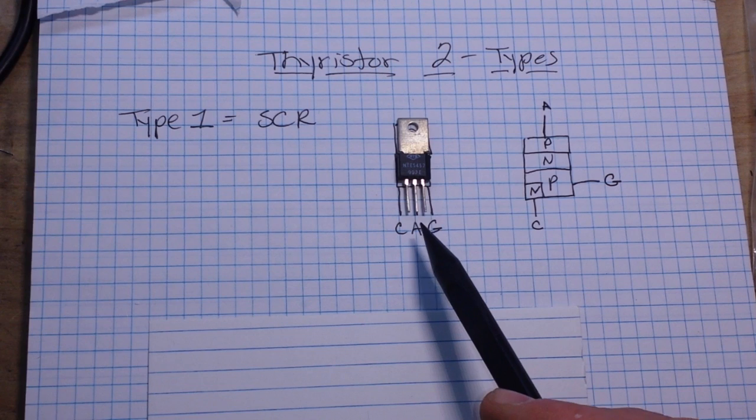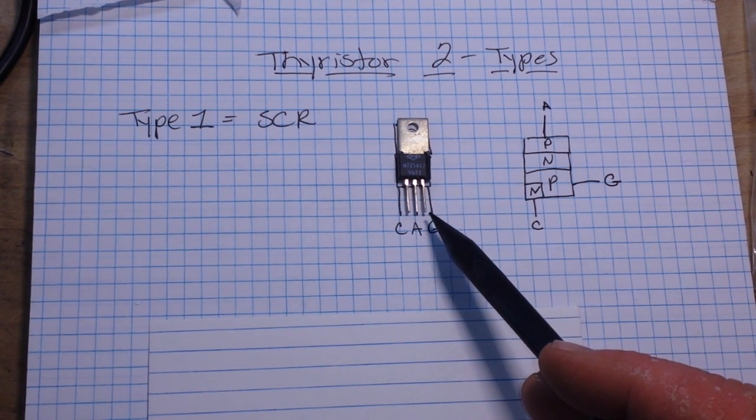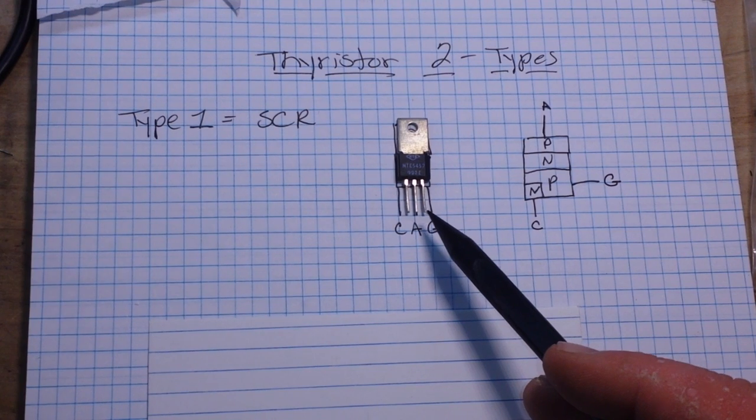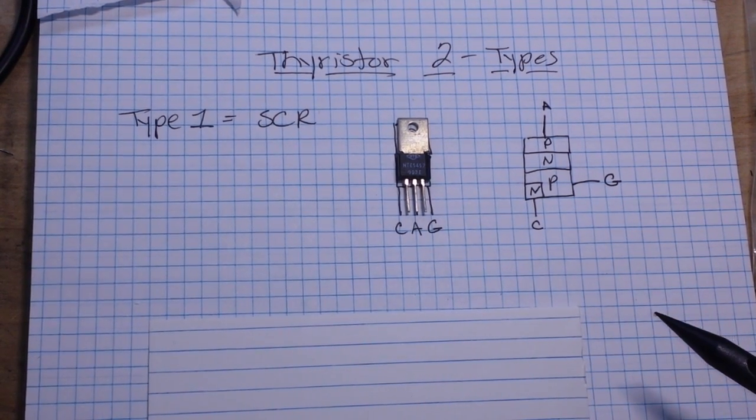devices with three leads. By putting a small current through one lead, a larger current is allowed to flow through the other lead. So what does that sound like to you? Anyone? Bueller? Bueller?